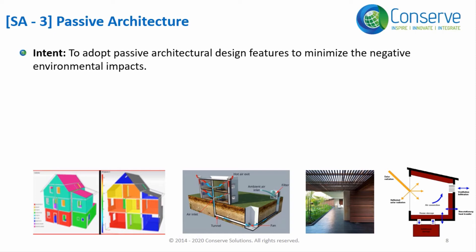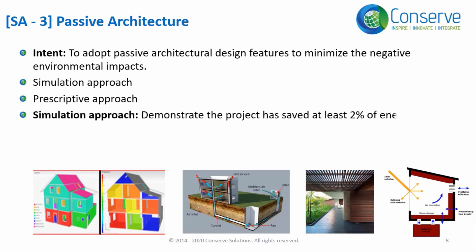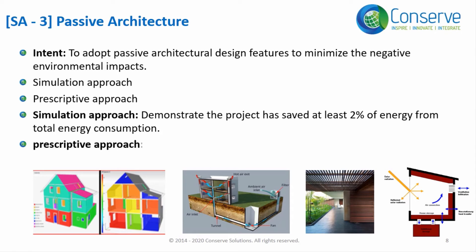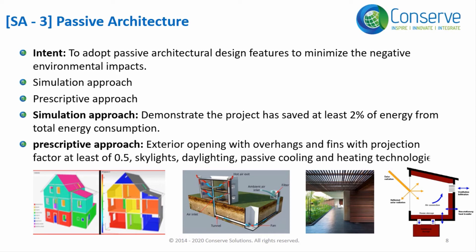Projects can earn points with two compliance approaches: Simulation Approach and Prescriptive Approach. In the Simulation Approach, demonstrate that the project has saved at least 2% of energy from total energy consumption. In the Prescriptive Approach, projects must adopt passive architectural strategies like exterior openings with overhangs and fins with a projection factor of at least 0.5, skylights, daylighting, and passive cooling and heating technologies.